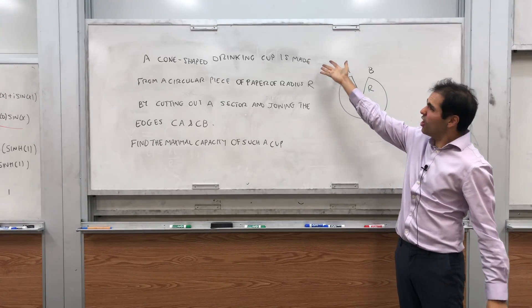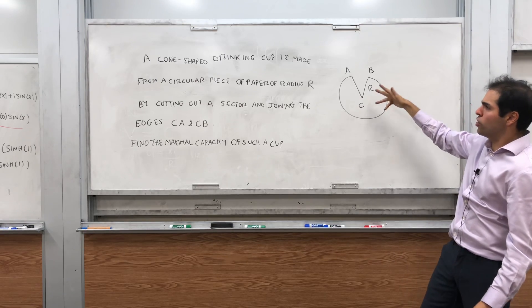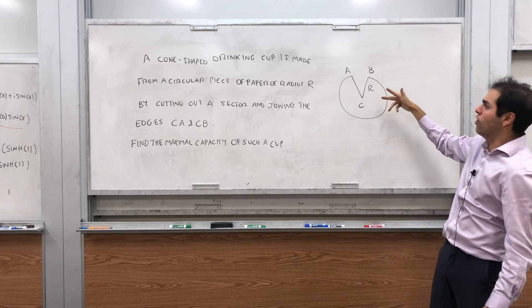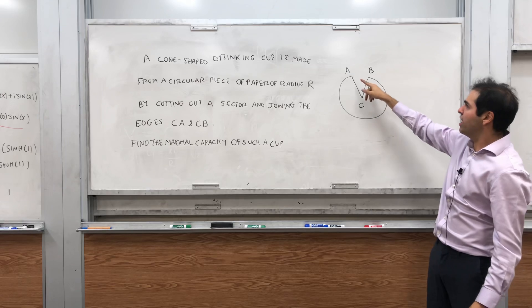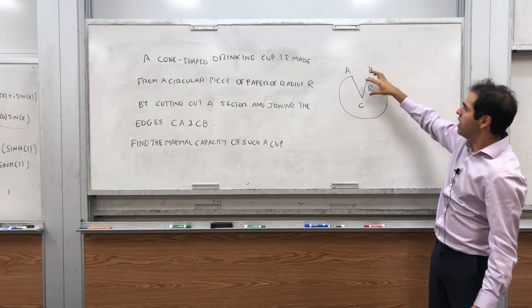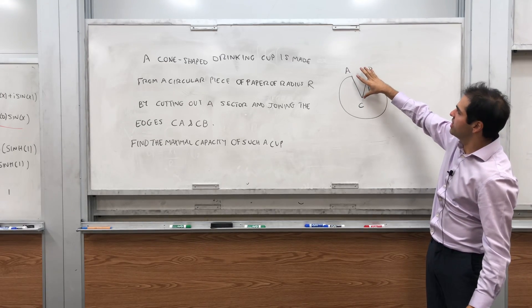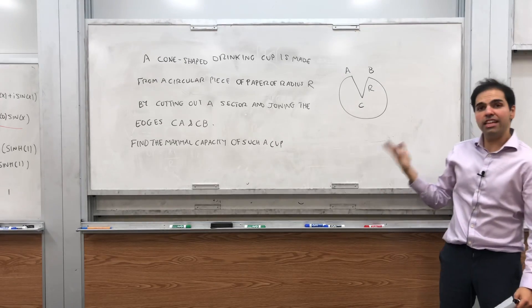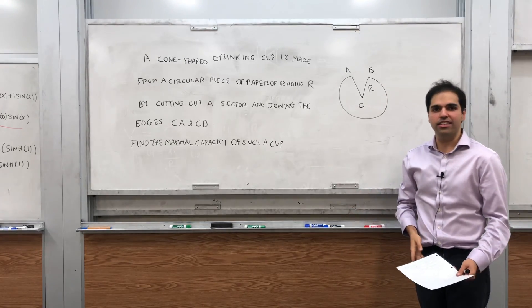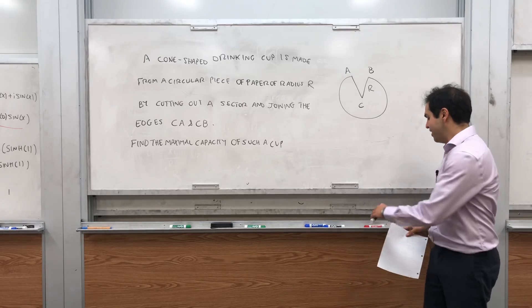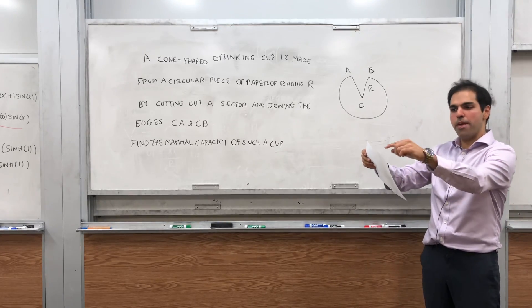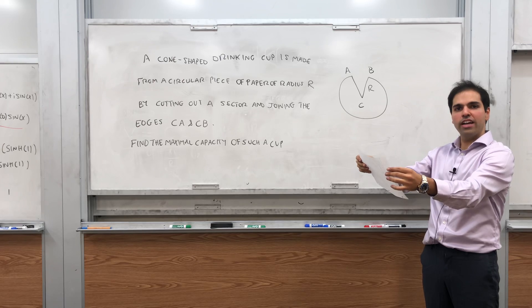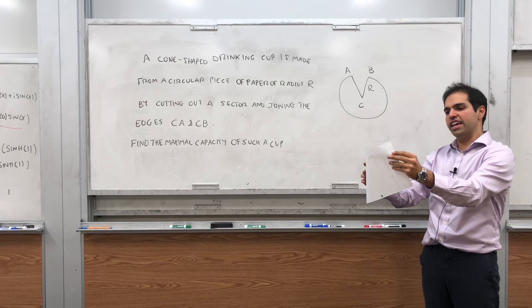A cone-shaped drinking cup is made from a circular piece of paper of radius r by cutting out a sector and joining those two edges CA and CB. And the question is, let's find the maximum capacity of such a cup. The idea is you have a piece of paper where you cut out a little triangle and you try to join the edges.